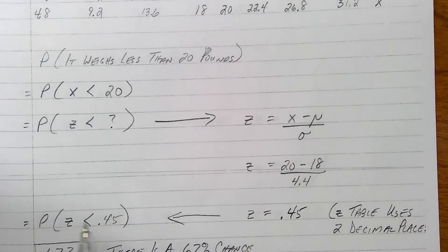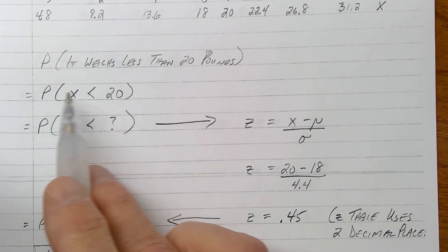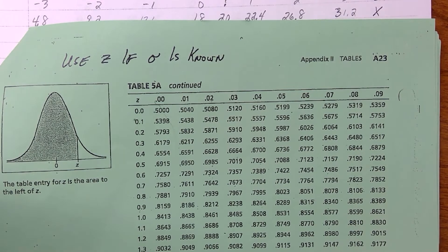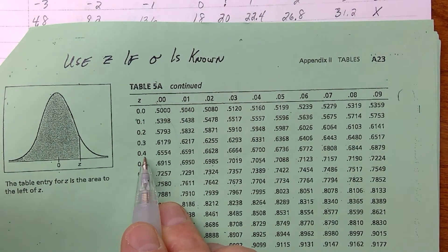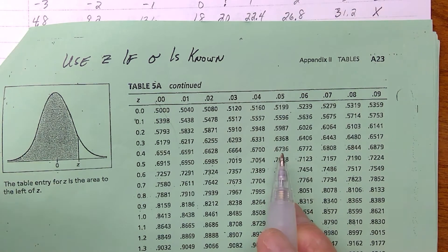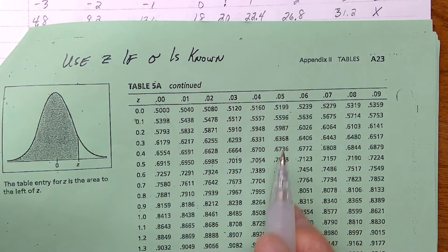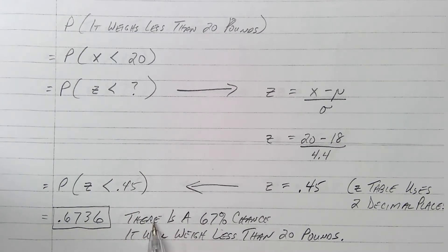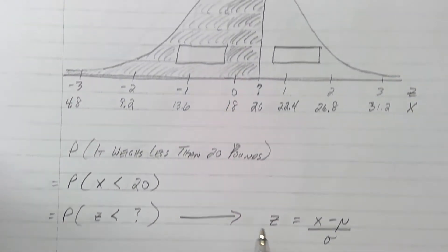The probability that this thing weighs less than 20 — the probability that I grab a random dog — is the same as saying the probability that Z is less than 0.45. I grab my Z table, look at 0.4 and then the column for 5. The result is 0.6736 — there's about a 67.36% chance that I grab an animal that weighs less than 20 pounds, or you can think of it as about 67 people living to the left of that number. So the probability that Z is less than 0.45 is 0.6736.